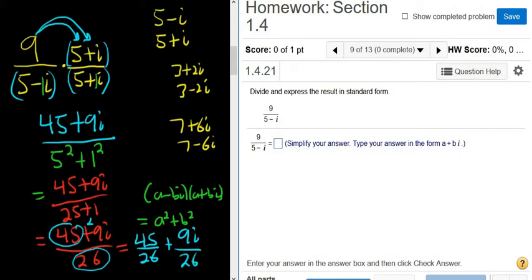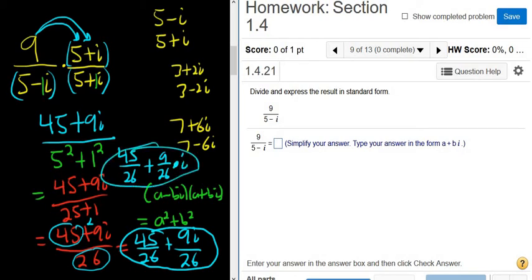So you can write it like that. Another way to write the answer, by the way, is 45 over 26 plus 9 over 26 times i. So the i's on the outside, so you can put it on the outside, or you can put it up top. Both are perfectly acceptable answers. I hope that made sense.